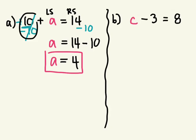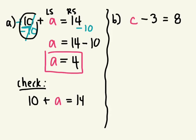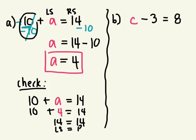Let's look back at the original question and see if it makes sense. The question said 10 plus a number is equal to 14. We said that number is 4. Does that make sense? 10 plus 4 — does 10 plus 4 equal 14? Yes. 10 plus 4 is 14, so 14 equals 14. It balances — the left side is equal to the right side. So this is correct.